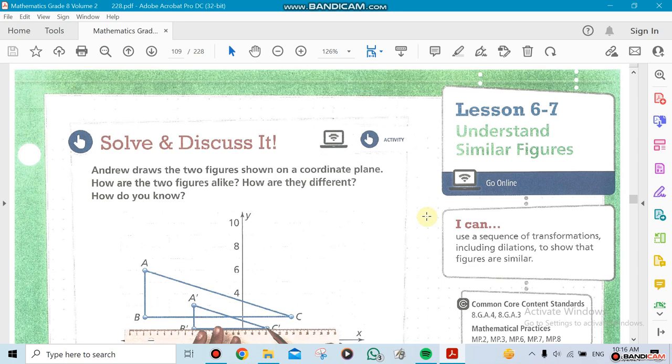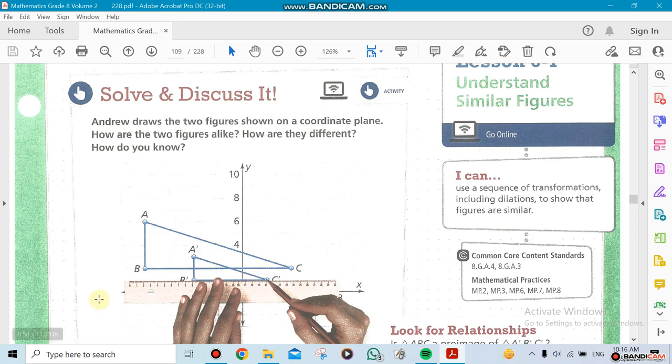This is lesson 6.7. We're going to be talking about similar figures. For example, you look at these two triangles here. You can see that this is a triangle and this is a triangle. We know for sure that they are not congruent, so they could be similar.